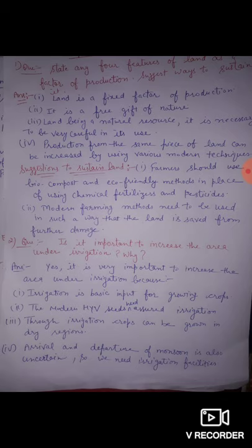The next question is: state any four features of land as a factor of production and suggest ways to sustain it. First, land is a natural or free gift of nature. Second, land is a fixed factor of production — it is fixed because land does not change after one or two years.